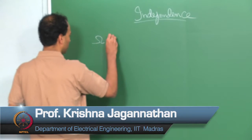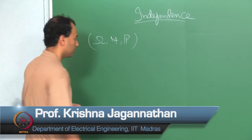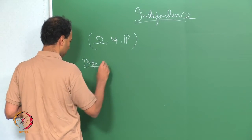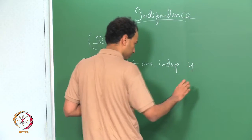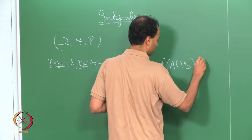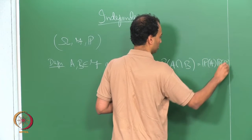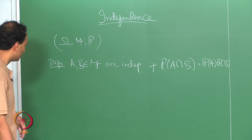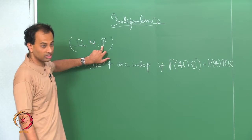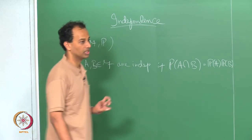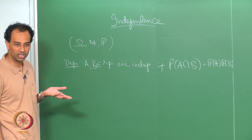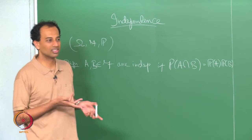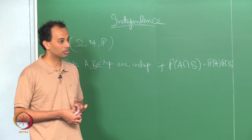We were discussing independence of events. We fixed a probability space and said that events A and B are independent. Two events A and B are independent under a probability measure if the probability of A intersection B equals the probability of A times the probability of B. Under some other measure they may not be independent. Whether two events are independent depends on what probability measure you are talking about.